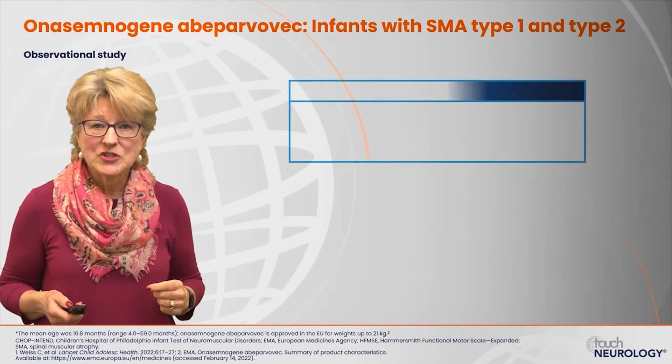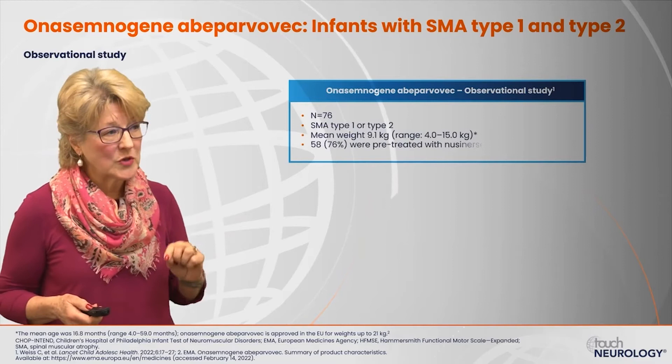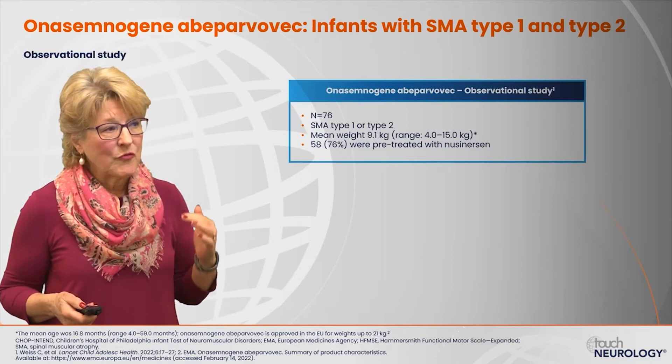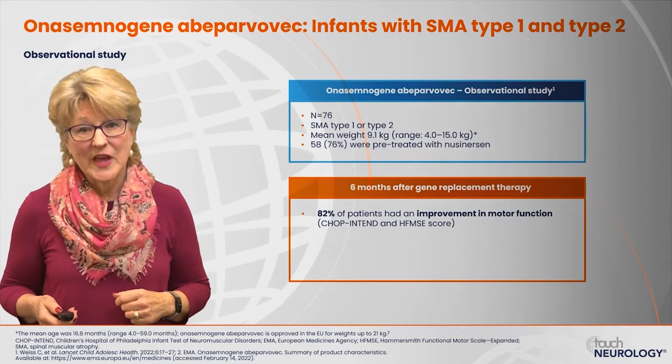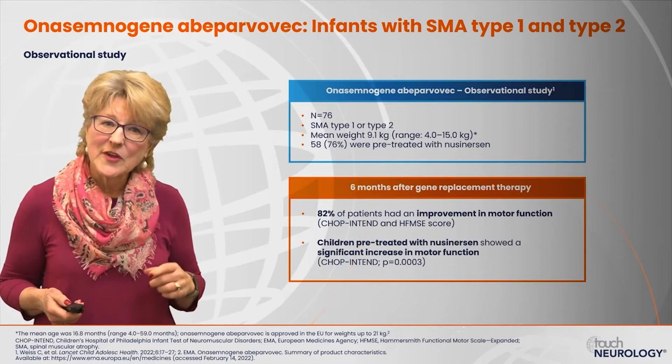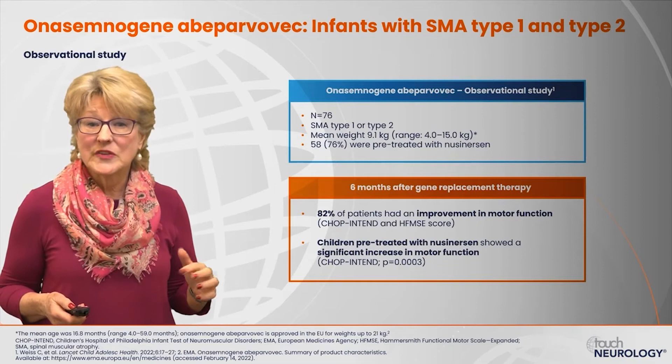In an observational study of 76 type 1 or type 2 patients treated with onasemnogene, 58 patients had been pre-treated with nusinersen before receiving gene replacement therapy. Six months after the gene replacement therapy, 82% of those patients had an improvement in motor function. It was also notable that children who were pre-treated with nusinersen showed a significant increase in motor function.